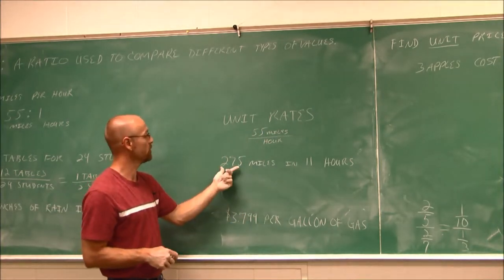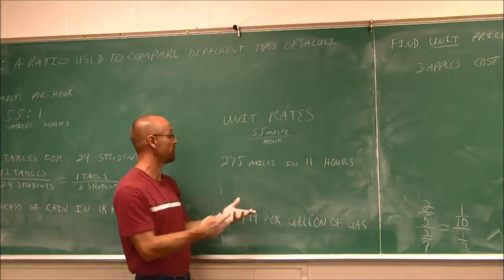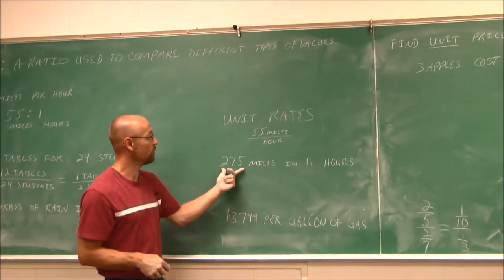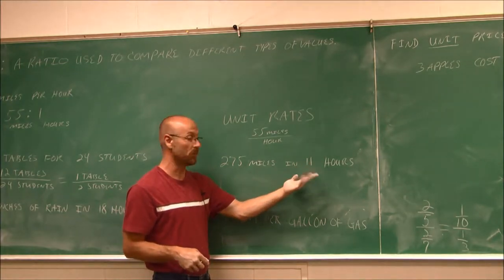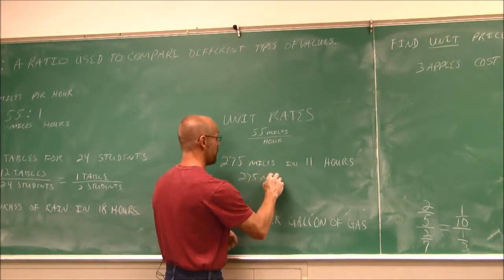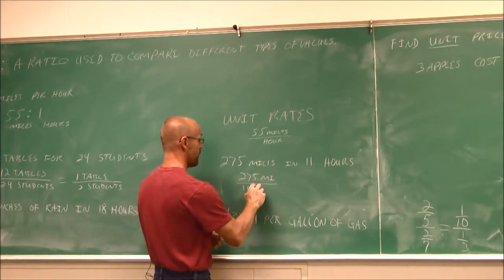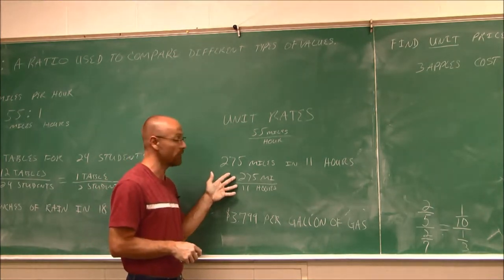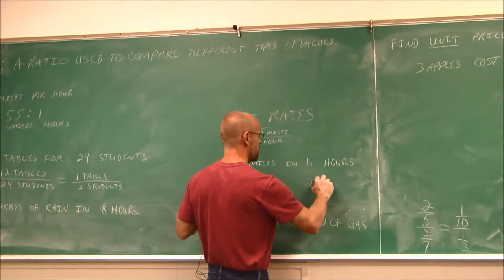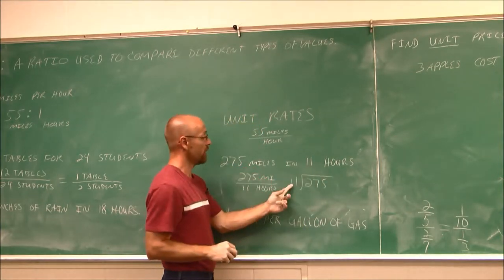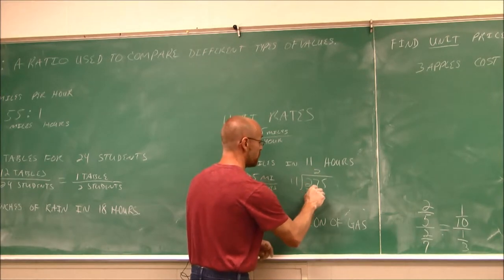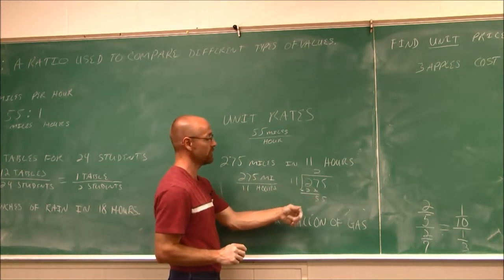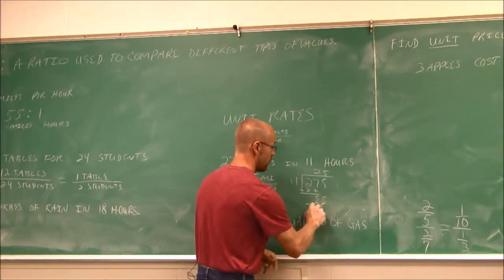What if we wanted to write 275 miles in 11 hours? Maybe we traveled 275 miles in 11 hours and we want to know what was our average rate. One thing we could do to get this to be a single unit, if we write 275 miles per 11 hours, one way we can do is reduce this or actually do the division. Let's do the division here, 275 divided by 11. 11 goes into 27 twice, which would be 22. If I find that difference, I get 5. Bring down the next digit.